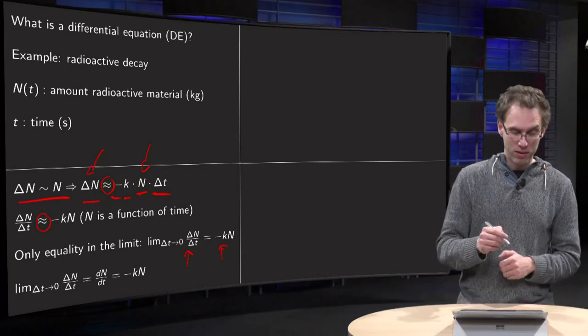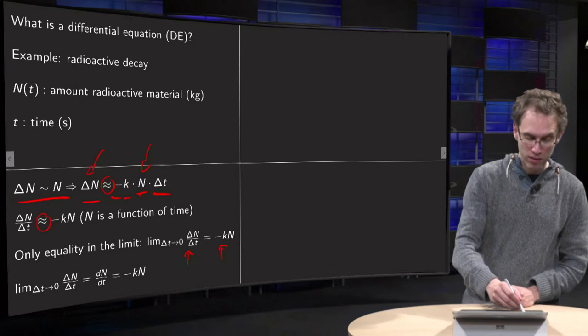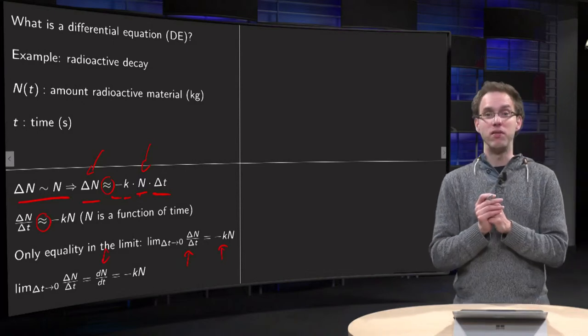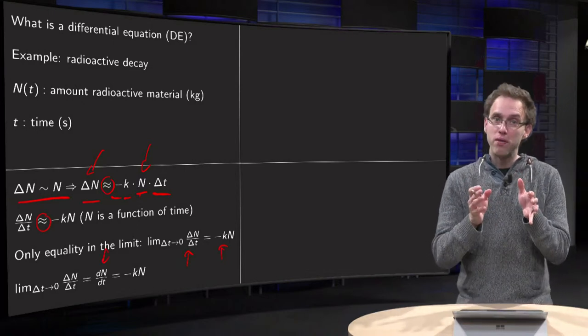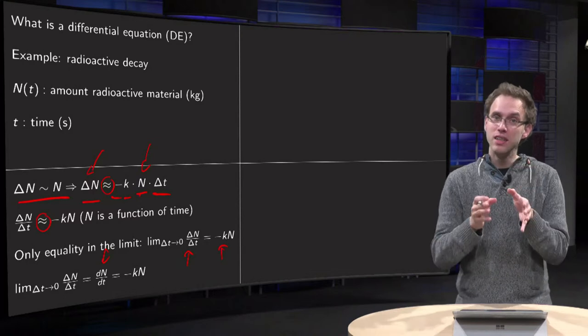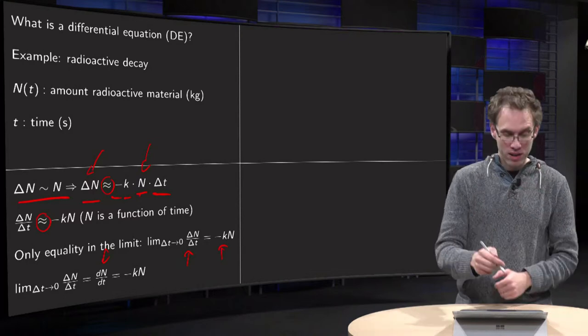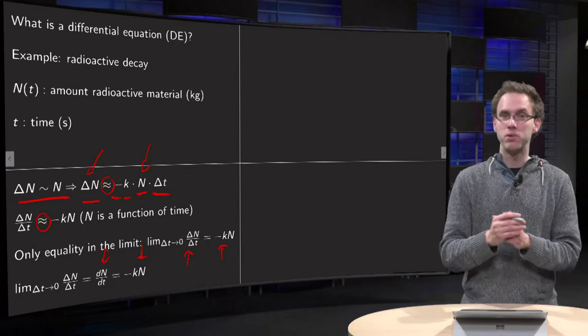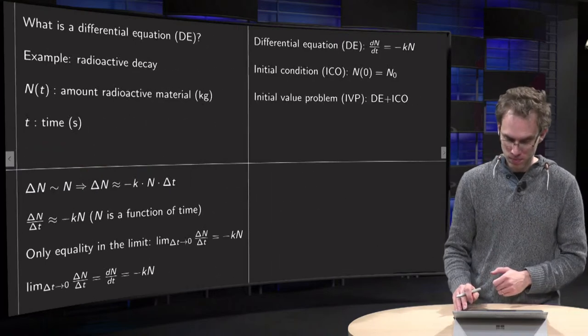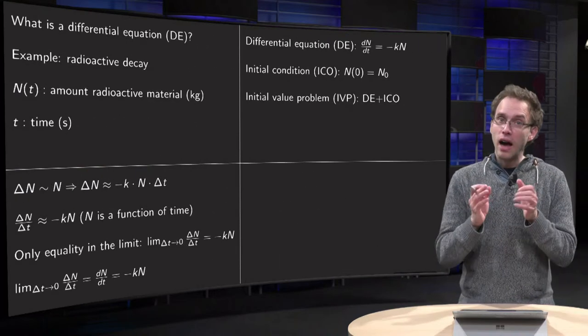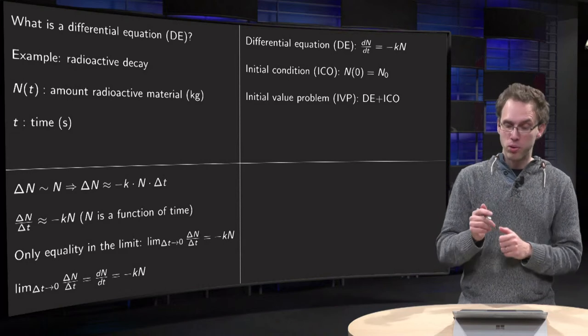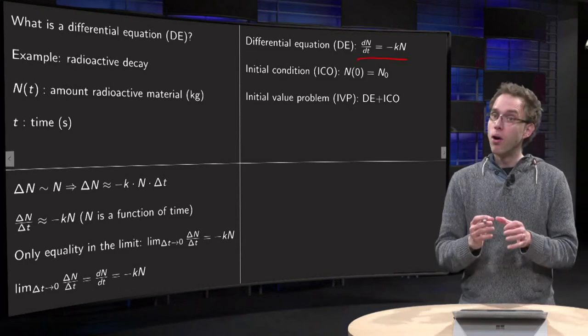And you recognize on the left hand side dN/dt, the derivative of N, capital N, with respect to t. So here you have an example where the dN/dt, the rate of change of N, depends on the capital N. And that is an example of a so-called differential equation.